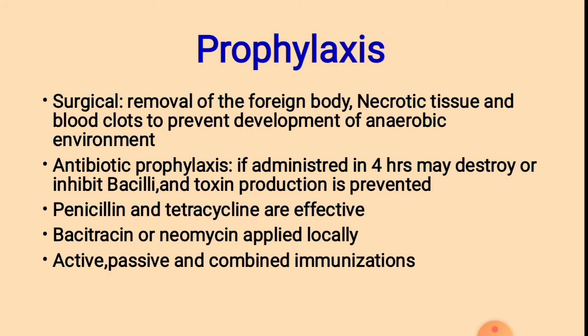Prophylactic measures: Surgical prophylaxis involves removal of foreign bodies, necrotic tissue, and blood clots to prevent development of an anaerobic environment. Antibiotic prophylaxis is the usual treatment method; if administered within 4 hours, it may destroy or inhibit bacilli and prevent toxin production. Penicillin and tetracycline are effective antibiotics. Bacitracin or neomycin is applied locally.